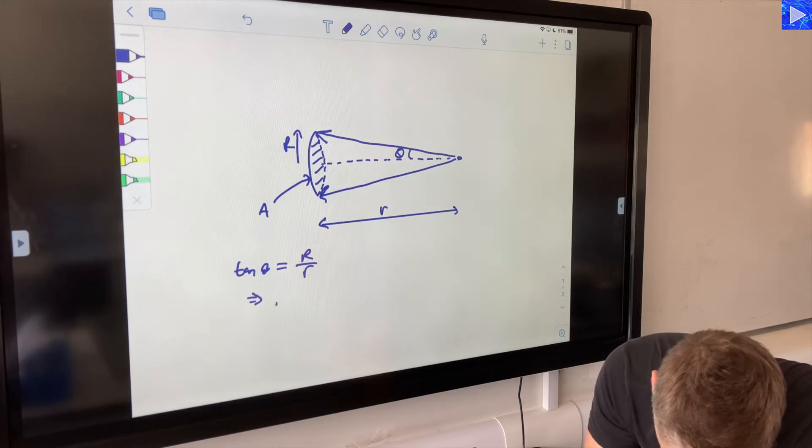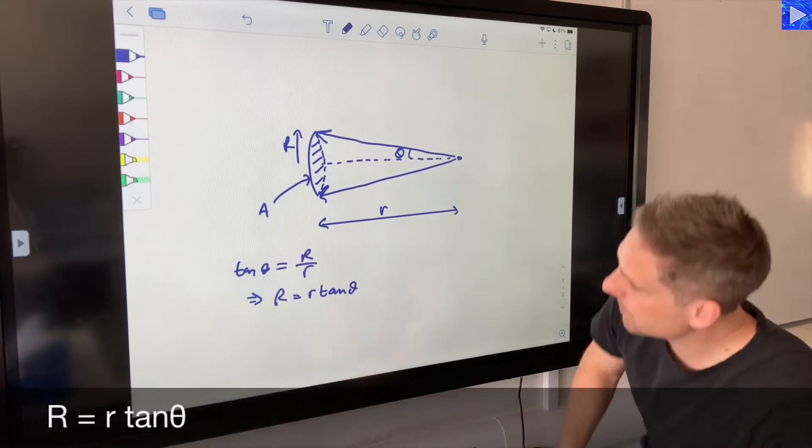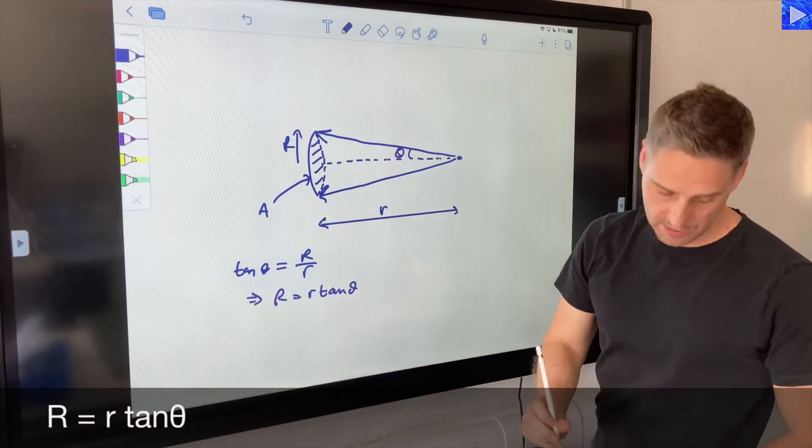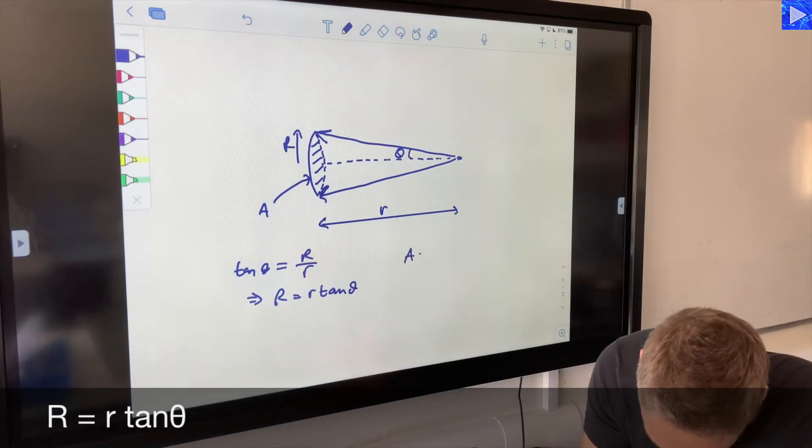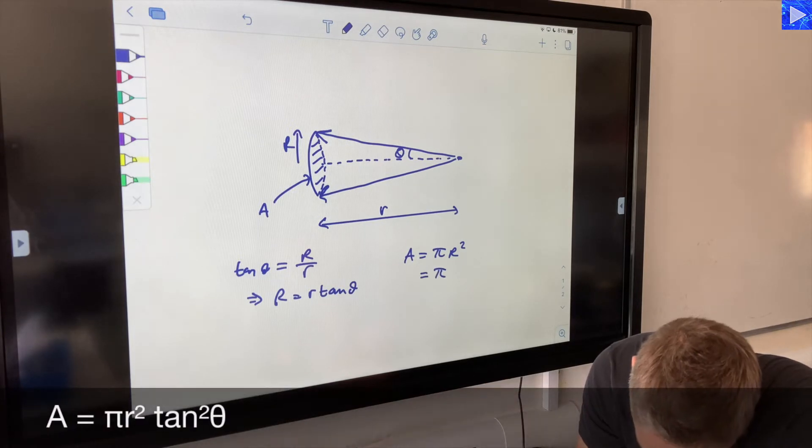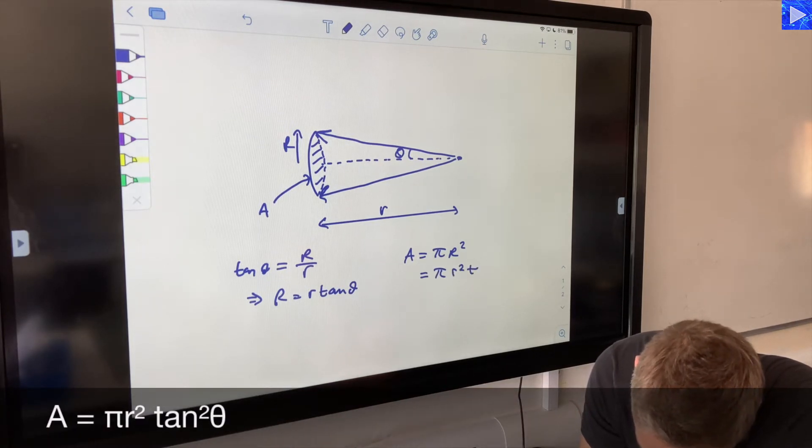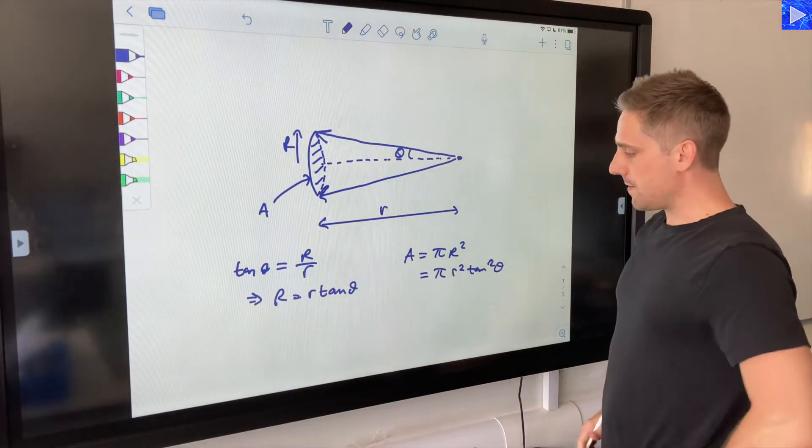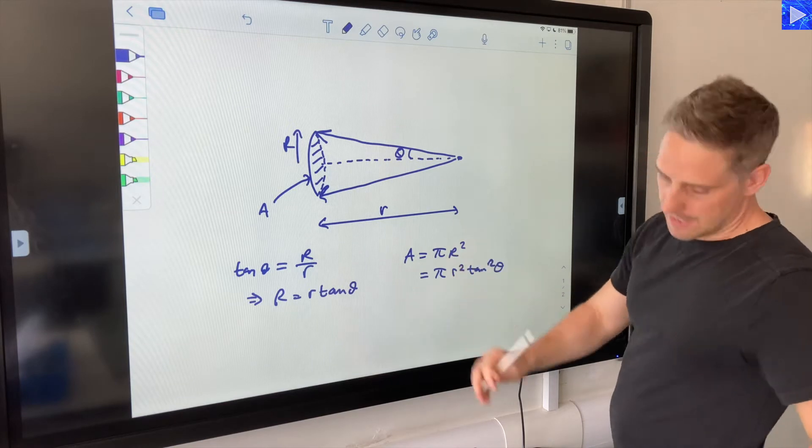So we can write R equals r tan theta. And since this is the area of a circle of radius large R, A is pi R squared. So therefore it is pi times r squared tan squared theta. Okay, so that's our expression there for A.